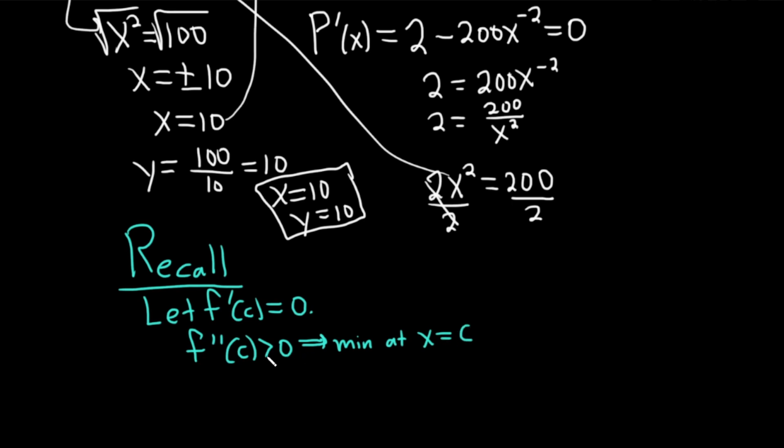And if it's negative at c, you're going to have a max at x equals c. This is extremely important to do in pretty much every single problem you do involving optimization. But after you find your critical number, like I did here, we found our 10.